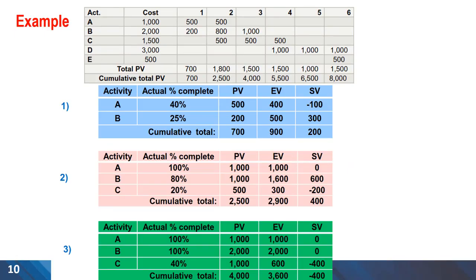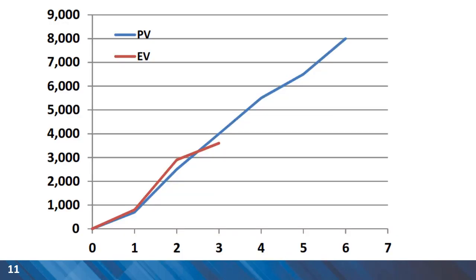In this example we have planned values and earned values given to us. We can calculate the schedule variance as the difference between earned value and planned value. Schedule variances are tabulated in the fifth column of the table. We encourage you to pause the video and calculate the schedule variances yourself. Cumulative total figures can then be used to plot planned value and earned value for each period of time.